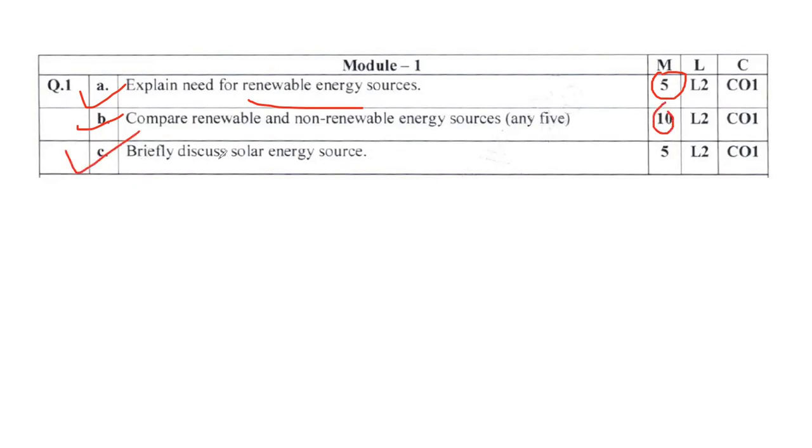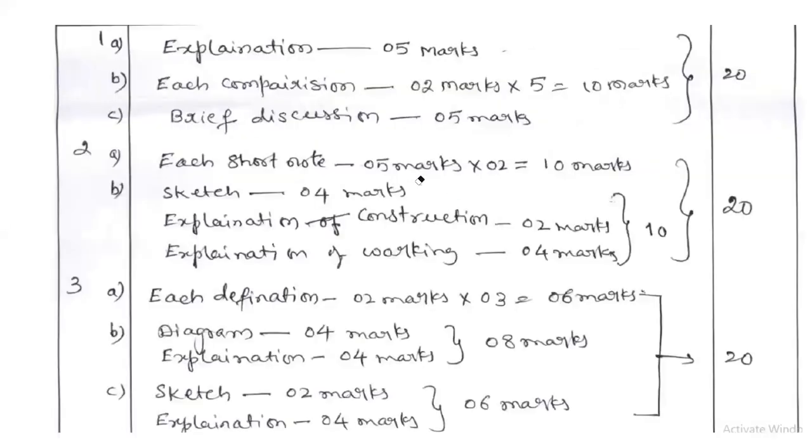Question C: briefly discuss solar energy sources for 5 marks. You can talk about PV and solar thermal. Solar PV means solar energy converted into electricity, whereas solar thermal means solar energy converted into useful heat. Mention different sources of solar energy and you'll easily get 20 marks total. It's purely general type questions. Hard preparation is not required.